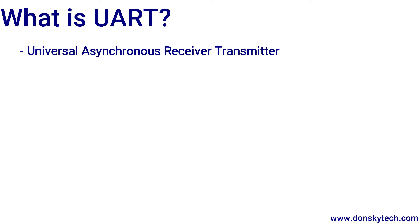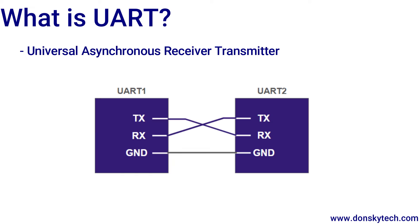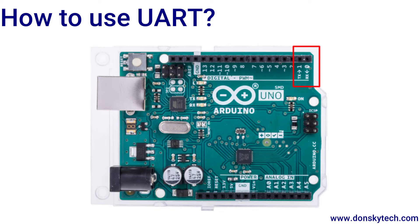One term commonly used together with serial communication is UART, or Universal Asynchronous Receiver Transmitter. UART is a specific hardware communication protocol that defines how data is transmitted serially between devices. The speed at which bits are transferred between the sender and the receiver is called the Baud Rate. If you have worked with your Arduino Uno before, you're quite familiar with the RX and TX pins — these are the same UART pins used to communicate with another serial device.